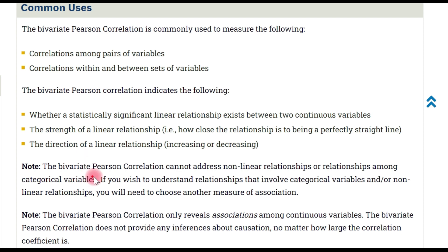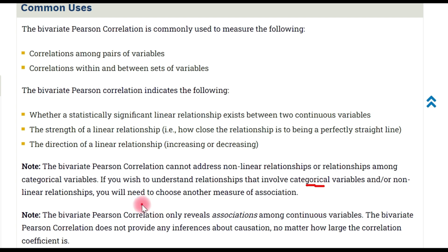The Pearson correlation coefficient cannot address non-linear relationships or relationships among categorical variables. If you wish to understand the relationship involving categorical variables or a non-linear relationship, you will need to choose another measure of association.